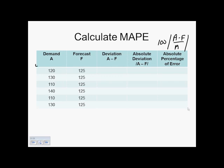On slide 21, you'll see the same setup as before: actual demand in the first column, forecasted demand in the second, deviation A minus F in the third, then the absolute deviation of A minus F, and the absolute percentage error — which is 100 times the absolute value of A minus F divided by A. For our six time periods, the absolute deviations are: five, five, fifteen, fifteen, fifteen, and five.